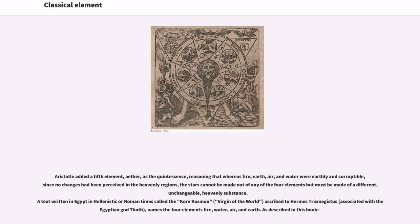Aristotle added a fifth element, ether, as the quintessence, reasoning that whereas fire, earth, air, and water were earthly and corruptible, since no changes had been perceived in the heavenly regions, the stars cannot be made out of any of the four elements but must be made of a different, unchangeable, heavenly substance.